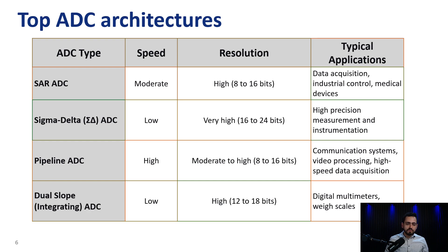In our table, we are starting with SAR, or successive approximation register ADC. These ADCs usually offer moderate speed, typically from a few kilo samples per second up to a few mega samples per second, and they also offer rather high resolution, up to 16 bits. They are known as general-purpose ADCs for their balance between speed, resolution, and power consumption.